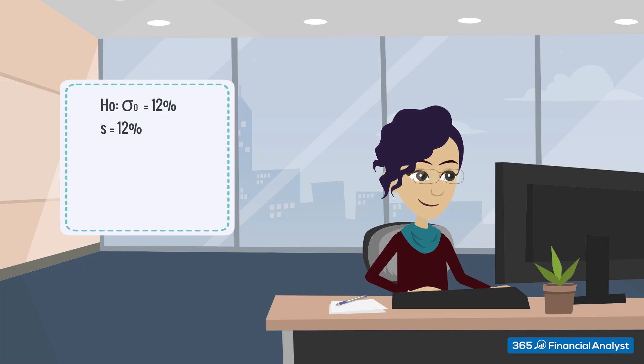The risk manager works with monthly data, and hence, the sample is made of 24 observations. Therefore, we have 23 degrees of freedom, n minus 1. Given the nature of the test she would like to perform, we can say that this is a two-sided test.